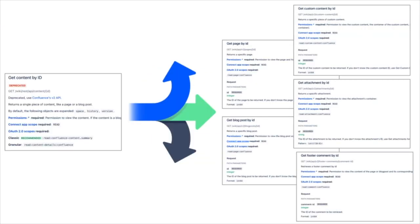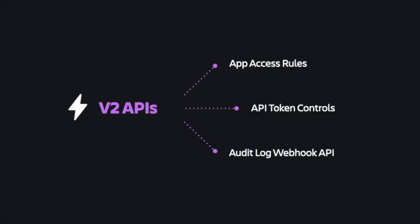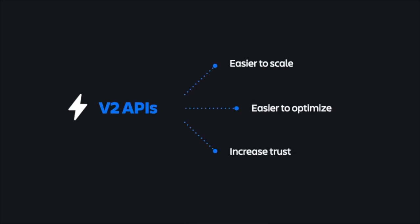This is why within V2 the get content by ID endpoint has been succeeded by get page by ID, get blog posts by ID, get custom content ID, and so on. This also goes hand in hand with many other publicly roadmapped deliverables such as app access rules, API token controls, and the autolog webhook APIs. Many of these initiatives on our public roadmap directly benefit from the more granular design of the V2 API. Overall, we want these new V2 APIs to be designed for scale, easy to build on and optimize, and help increase customer trust in apps.